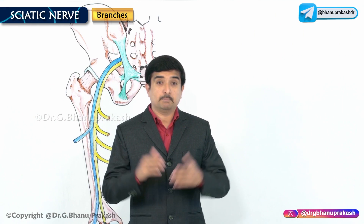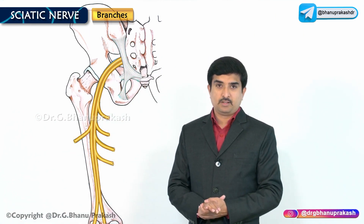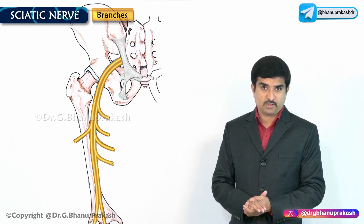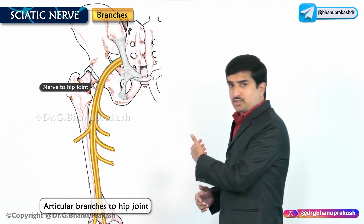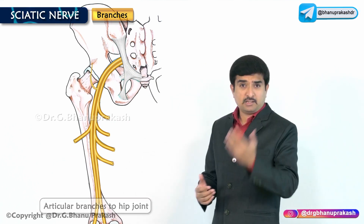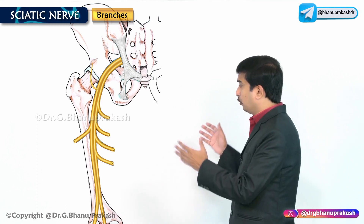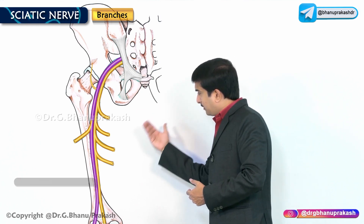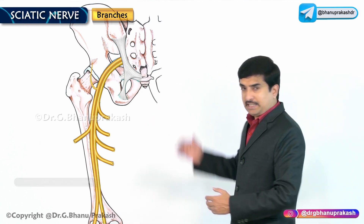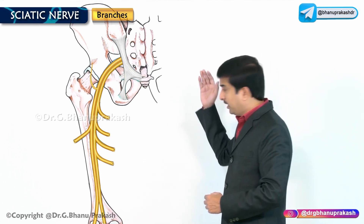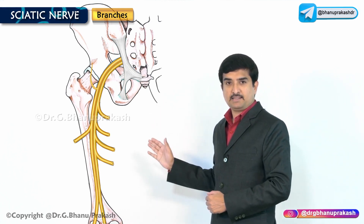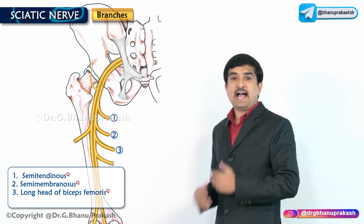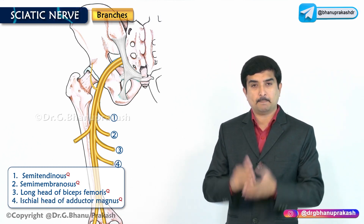The sciatic nerve has articular and muscular branches. The articular branch is given to the hip joint. The muscular branches are discussed in two parts. The tibial component, which is the medial component, supplies semitendinosus, semimembranosus, long head of the biceps femoris, and the ischial head of the adductor magnus.